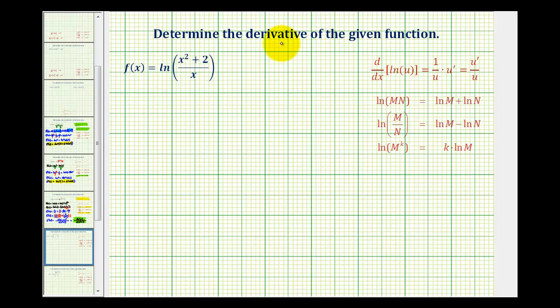Notice, to determine the derivative of the given function involving the natural log, we'd have to apply the chain rule where u would be a quotient, therefore u prime would require the quotient rule.